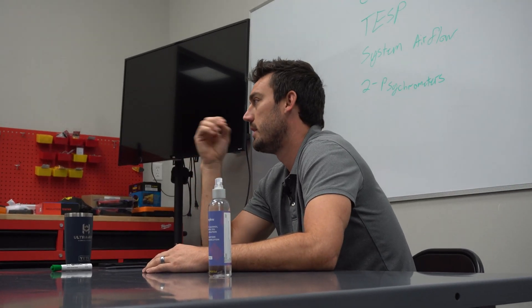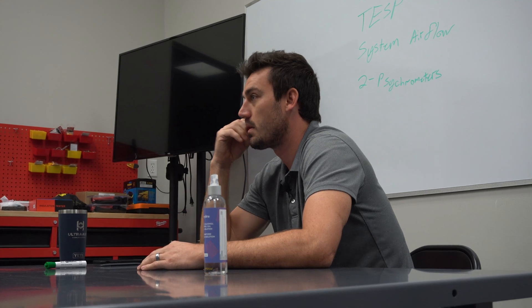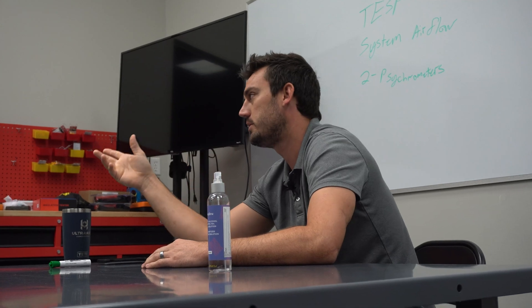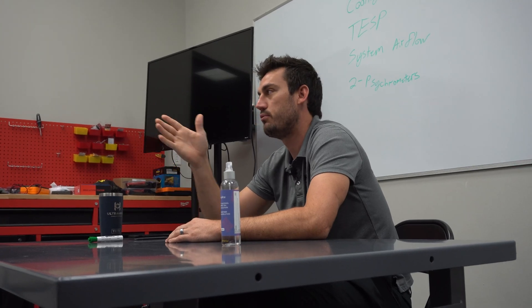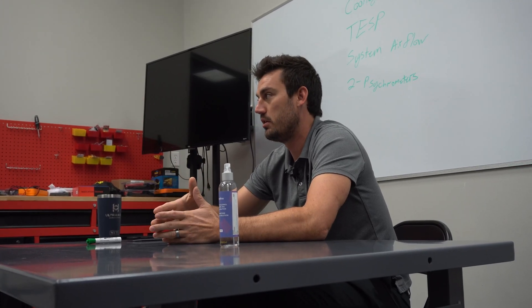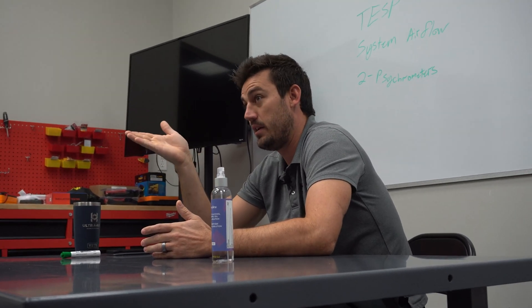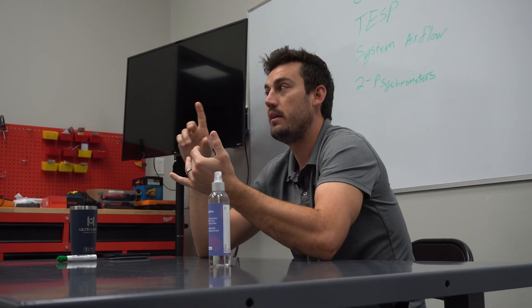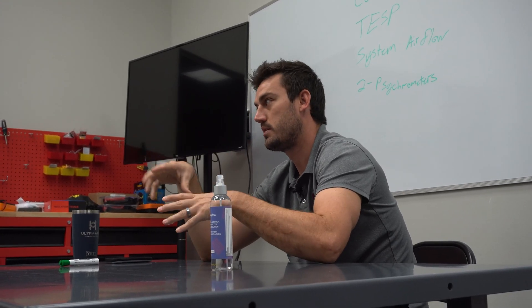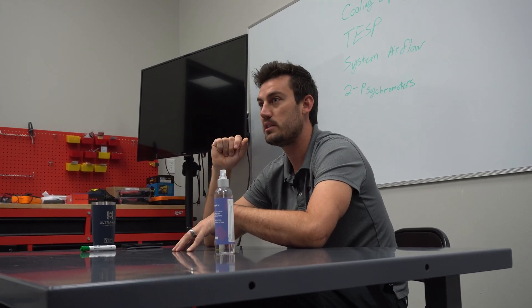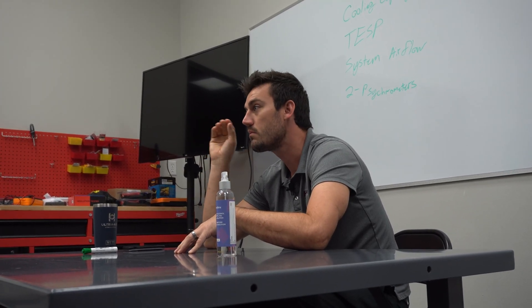On ECM motors it's not as much of a change as PSC motors. The point is we need to get our system airflow. When we're doing a new install, we want to check our total external static pressure, then cross-reference that to the fan chart — the airflow chart. We look at what speed tap we have it on and determine if we have it close to 350 CFM per ton in this climate, getting it as close to that as possible.